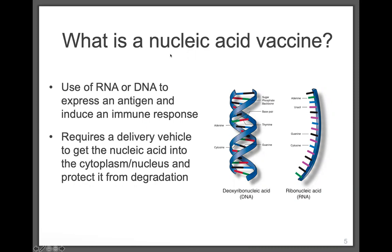So what is a nucleic acid vaccine? It is the use of RNA or DNA to express an antigen and induce an immune response. DNA is found in all cells in your body, and RNA is also found in cells. RNA is really the go-between for DNA and proteins. The catch-all for nucleic acid vaccines is that they require a delivery vehicle to get them into the cytoplasm or the nucleus, depending on whether it's RNA or DNA, and to protect them from degradation.